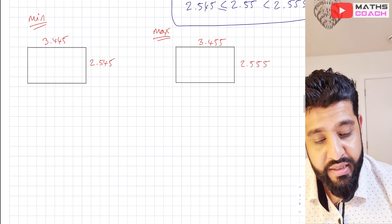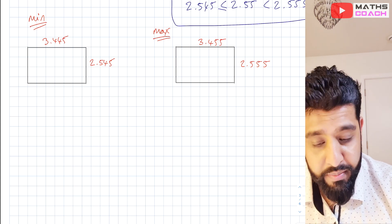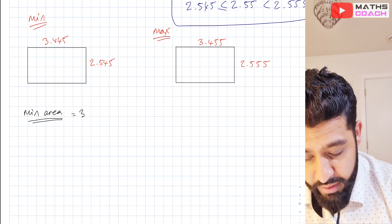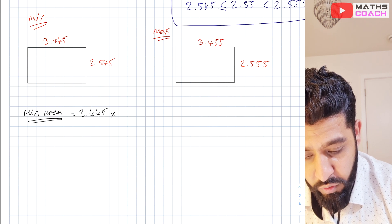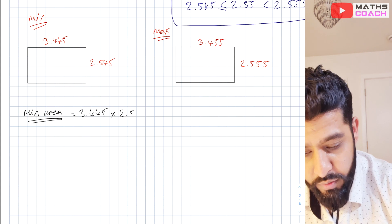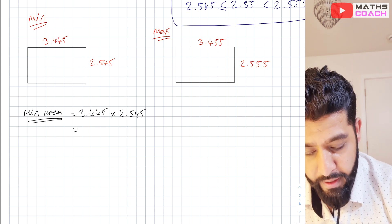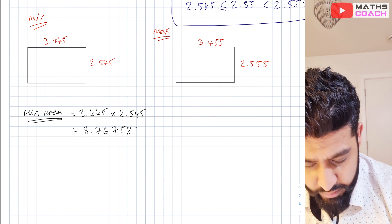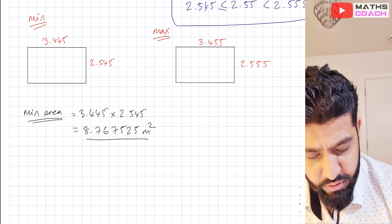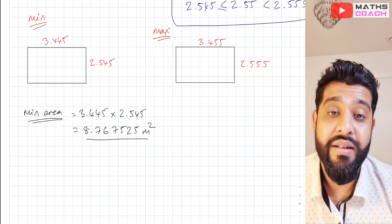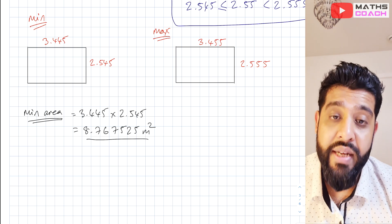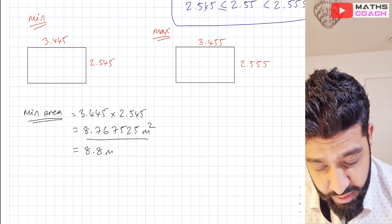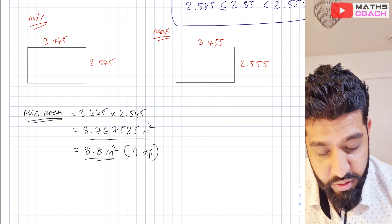The first question says to find the maximum and minimum area, and the maximum and minimum perimeter. For the minimum area, we multiply 3.445 times 2.545. If you do that on your calculator, that gives us 8.767525 square metres. Although the question hasn't asked us to round, we could have something sensible — perhaps 8.8 square metres, rounded to one decimal place.